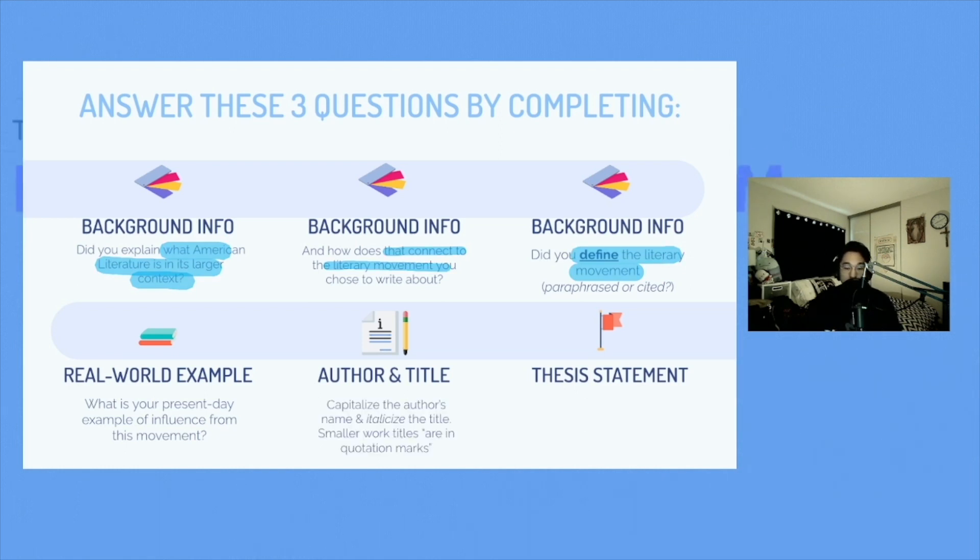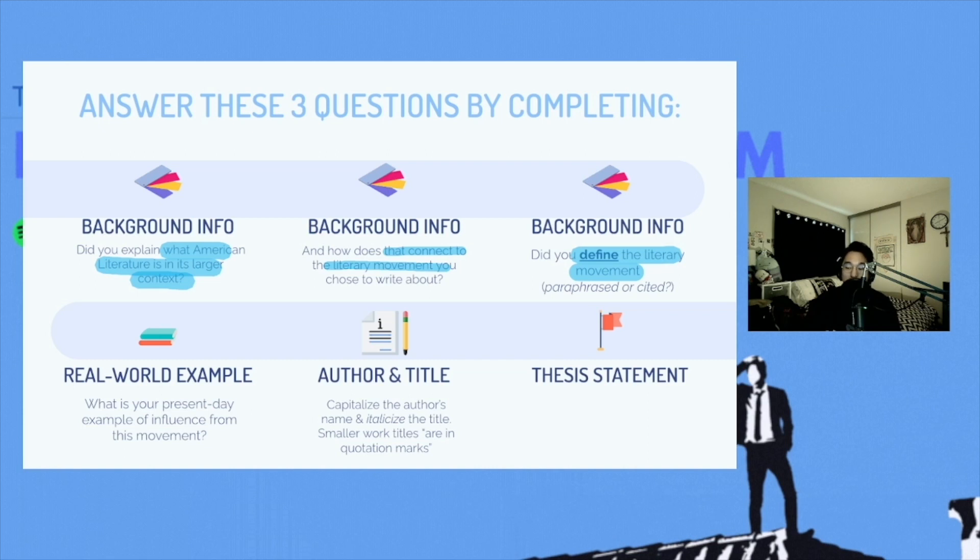Describe what that is and give your reader enough context about it. And that might include an author title, especially if it's a work of literature. If you need to capitalize the author's name and italicize the title, make sure you do so. And if it's a smaller work, then you can just leave it in quotation marks.